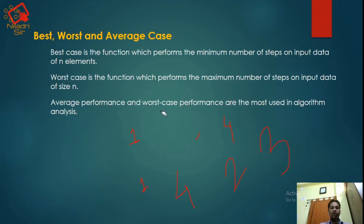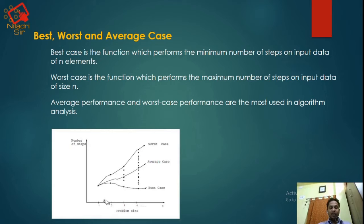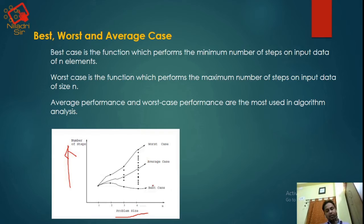To summarize: best case means the minimum time required to get our desired output; worst case means the maximum time required; and average case means the time between best case and worst case. In the graphical representation, the x-axis shows problem size and the y-axis shows number of steps. Best case is the lowest curve, average case is in the middle, and worst case is the maximum.